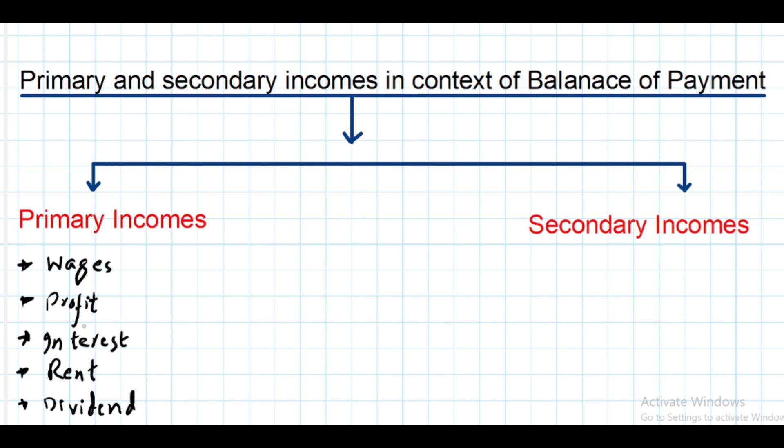Now coming to secondary income. Secondary incomes are the kind of incomes that are earned or received without corresponding exchange of goods and services, such as remittances, donations, gifts, and any kind of aid. These are payments or incomes that are received without corresponding exchange of goods and services. For example, if USA gives aid to some African country, then it will be secondary income for an African country.